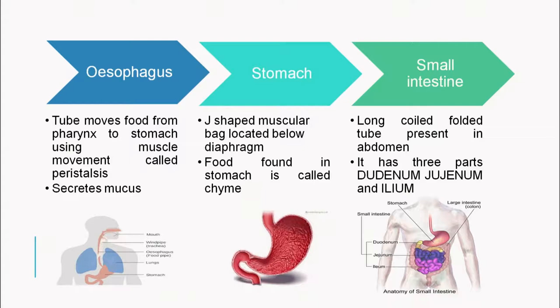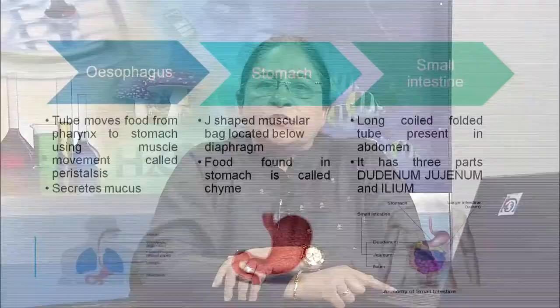After the stomach, partially digested food moves into the small intestine — a long, coiled, folded tube in the abdomen with three parts: duodenum, jejunum and ileum. The small intestine is about 7 meters long, because this is where absorption of digested food takes place with the help of specialized lining.